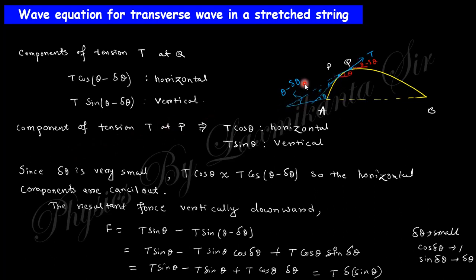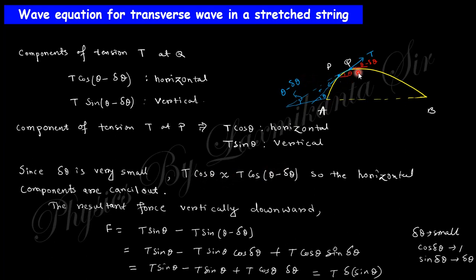At point Q, the horizontal component and vertical component of tension T are resolved. Similarly, at point P, the vector components are resolved. The horizontal components are opposite to each other. When delta-theta is very small, T cos(theta) and T cos(theta minus delta-theta) cancel out. Using the sin(A minus B) formula, cos(delta-theta) tends to 1 and sin(delta-theta) tends to delta-theta when delta-theta is very small.